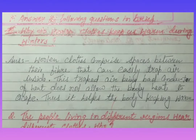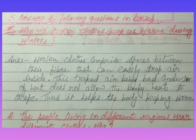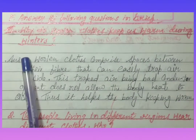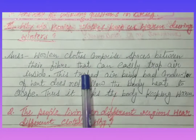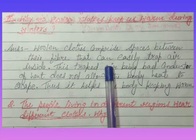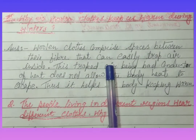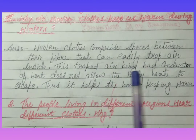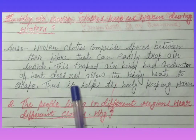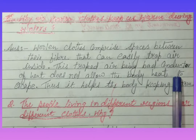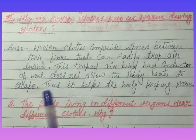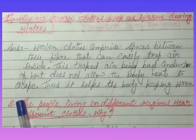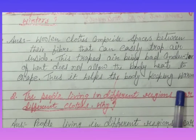Why do woolen clothes keep us warm during winter? Woolen clothes comprise spaces between their fibers that can easily trap air inside. This trapped air, being a bad conductor of heat, does not allow body heat to escape. Thus, it helps the body stay warm.